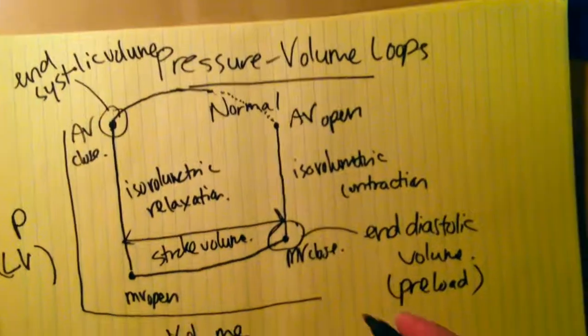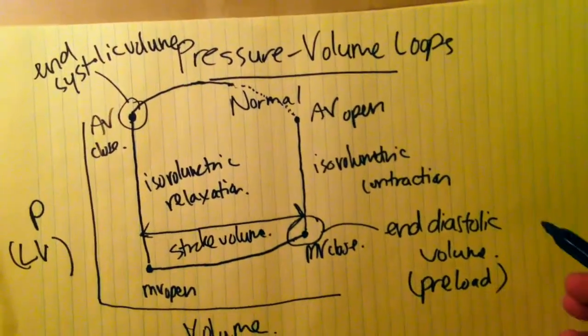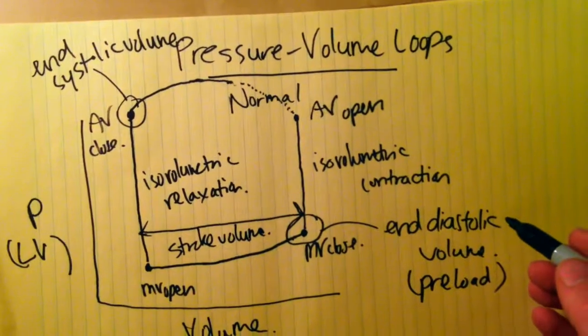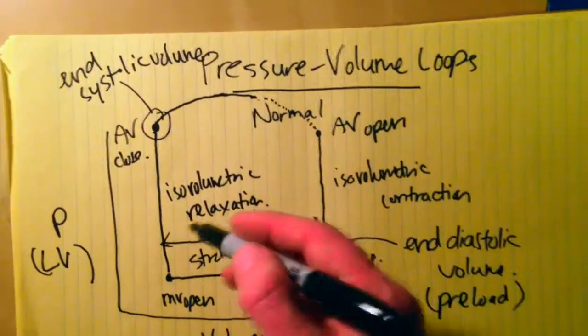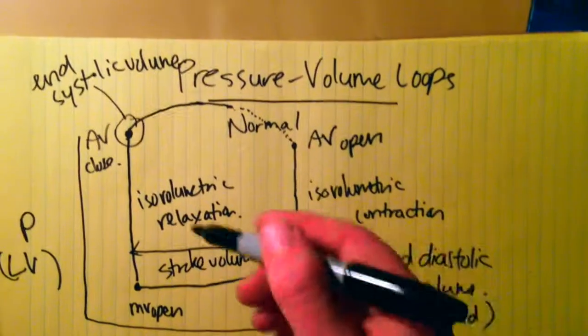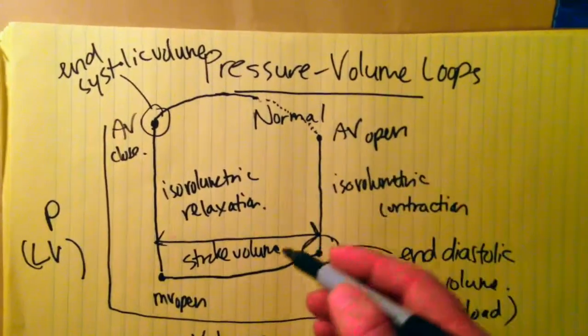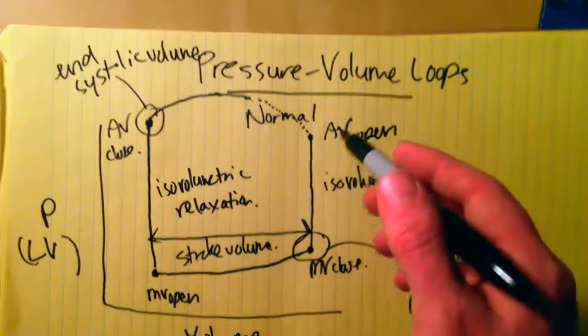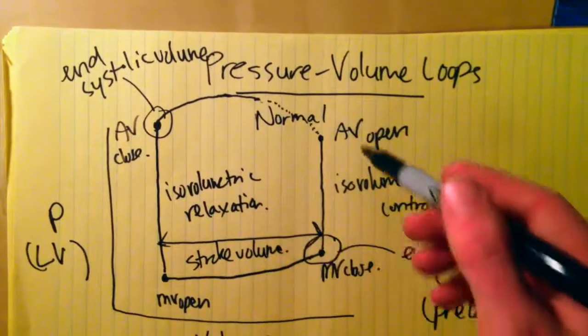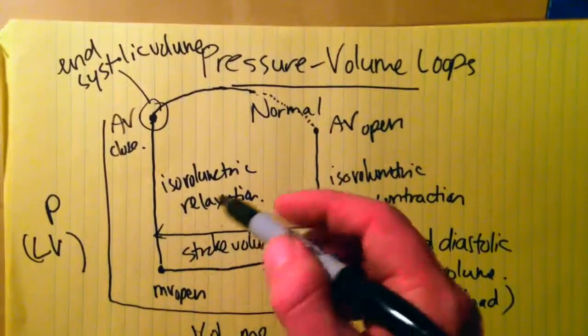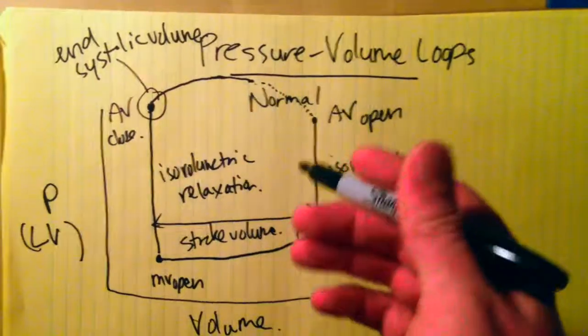So you can see, if you find ways of increasing your end diastolic volume or decreasing your end systolic volume, you can increase or alter your stroke volume. And we'll see in subsequent videos how stroke volume is affected by various forces that can be described by pressure-volume loops.